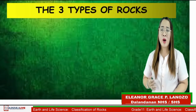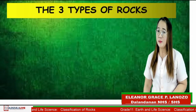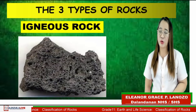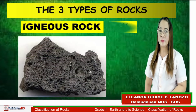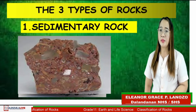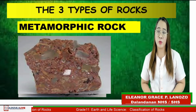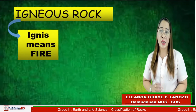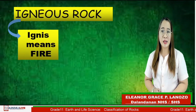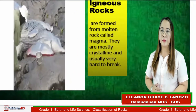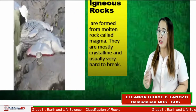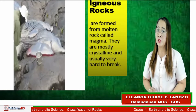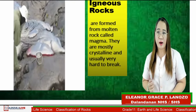What are the three types of rocks? The first one is igneous rocks. The second one is sedimentary rock. And the third one is metamorphic rock. When we say igneous, it means fire. So igneous rocks are formed from molten rock called magma. They are mostly crystalline and usually very hard to break.